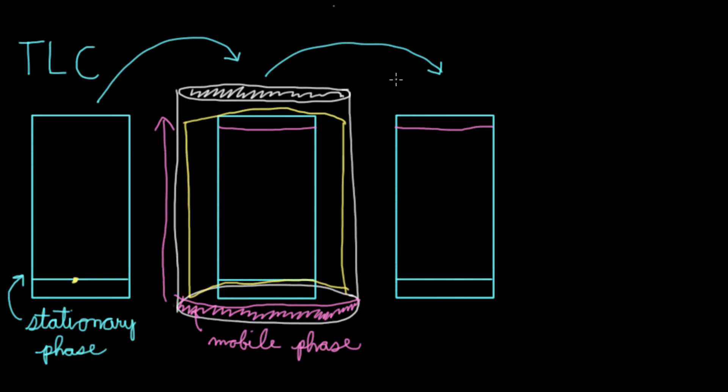So let's say we take our UV lamp and shine it on here. Compounds that are aromatic will usually show up and fluoresce. And let's say that we had these two dots. So what does that tell us? That tells us that whatever was in our reaction flask was a two-component mixture and that there's at least two compounds in there.